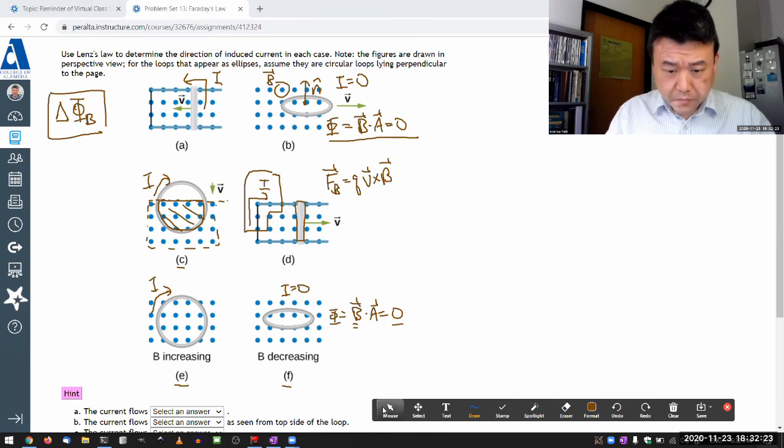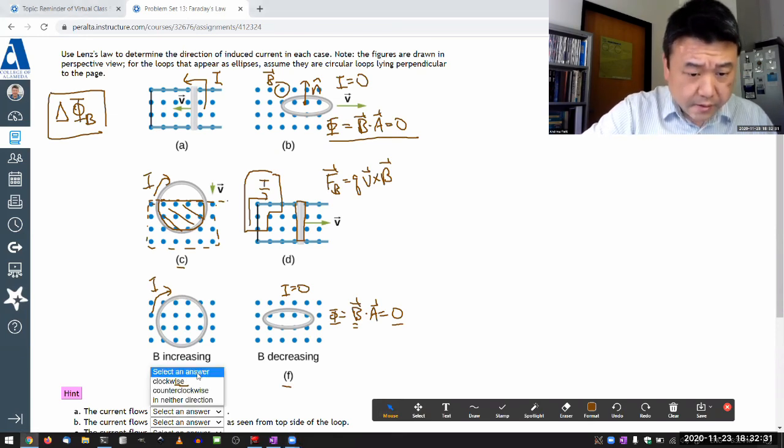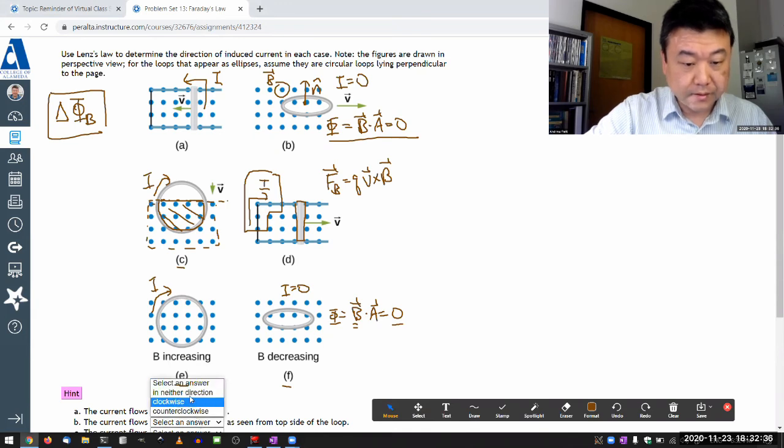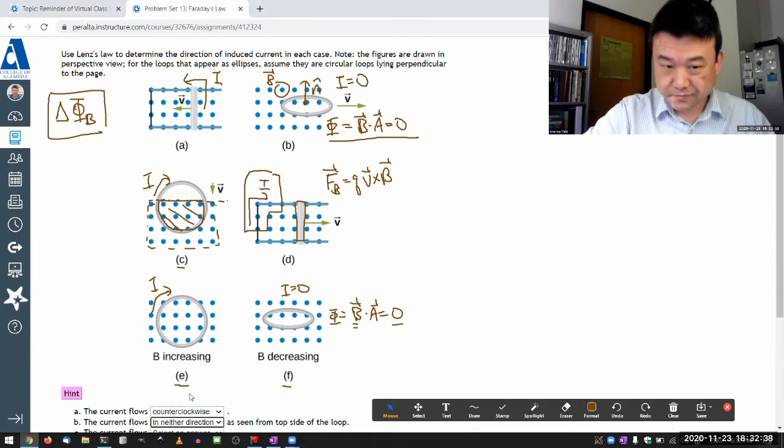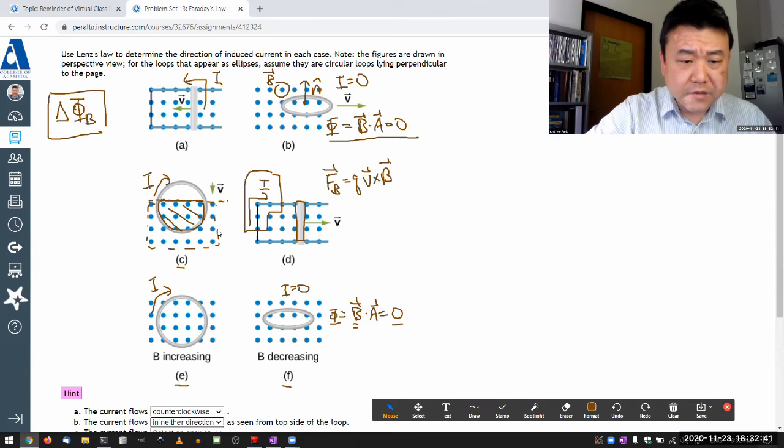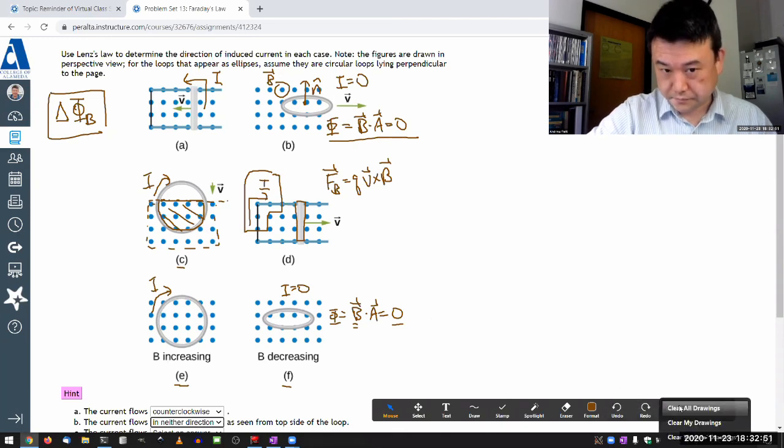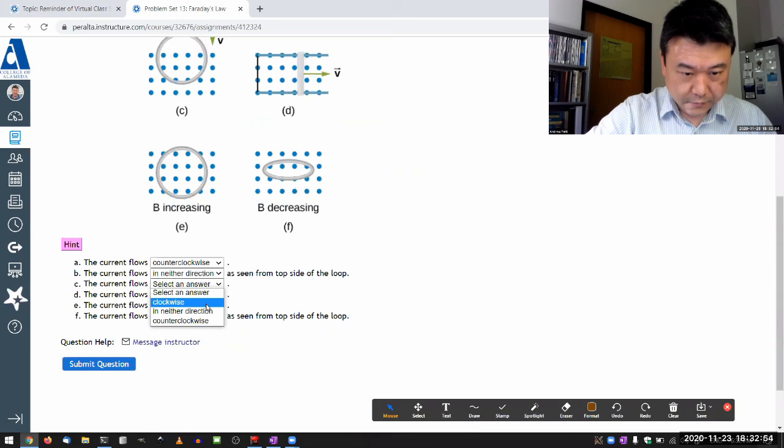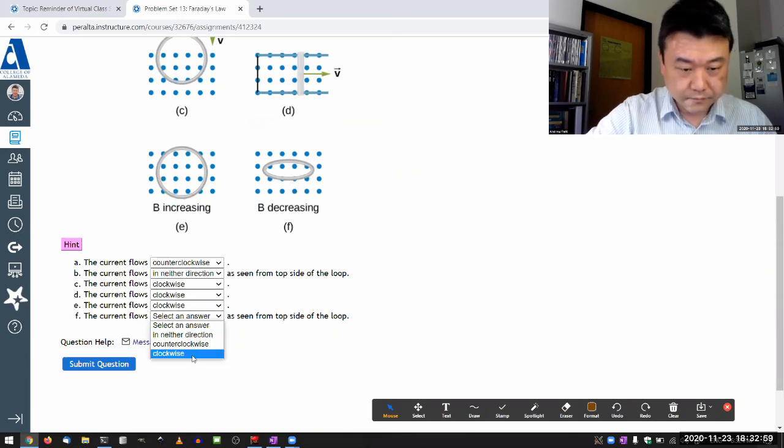Okay, so what's the best way to do this here? Let me try to mark it from here. So this will be counterclockwise. B will be in either direction, it's zero. And I'm just going to remember the rest. Clockwise, clockwise, clockwise, clockwise, zero.